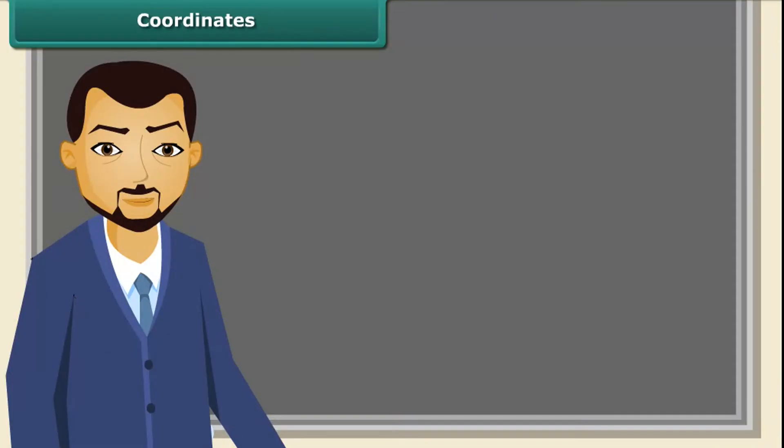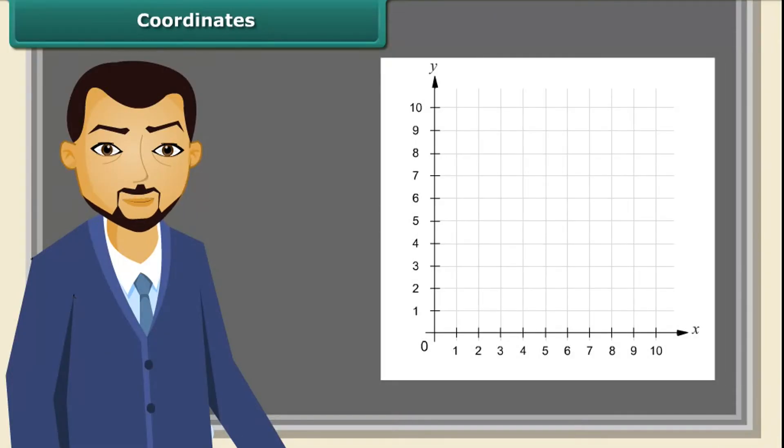Coordinates. Locate the seat in your class. For this, you need to know two numbers. That is, the row number and the column number.